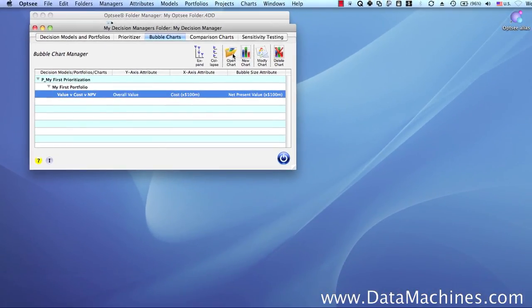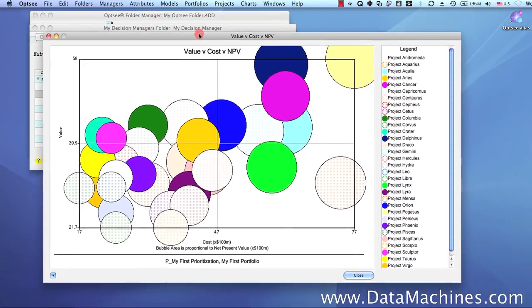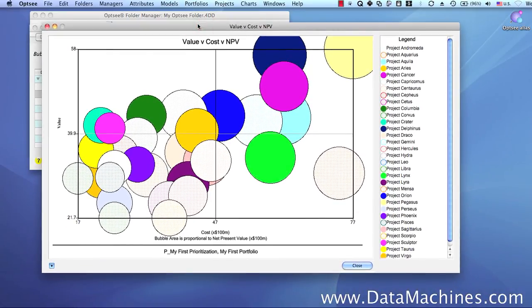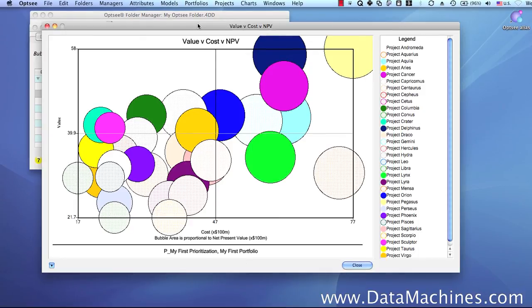As you can see, Bubble Charts are a very useful way of studying your portfolios relative to different attribute dimensions, and OPSEE has made it very easy for you to use them. You can try it for yourself on your own data by signing up for the OPSEE free trial at our website. My name is George Hune and thanks for watching.